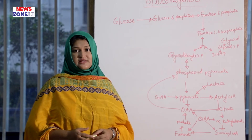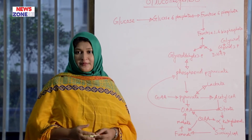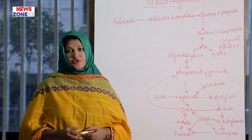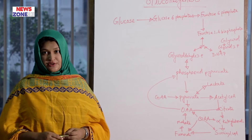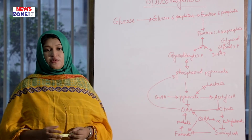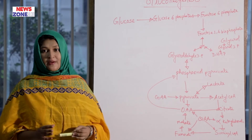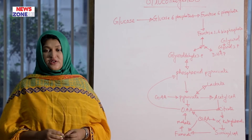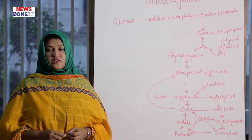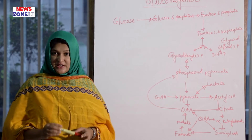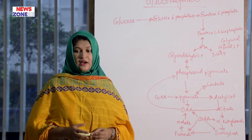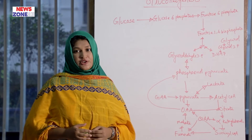The main compartment for gluconeogenesis is the cytoplasm, with the mitochondria also partly responsible. The importance of gluconeogenesis is that during fasting and starvation, it maintains normal blood glucose levels. Another important function is the disposal of lactic acid and glycerol under normal conditions.